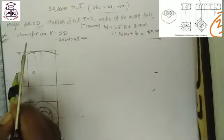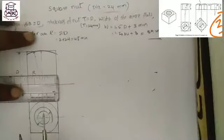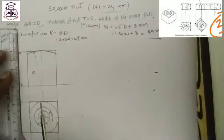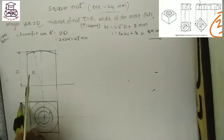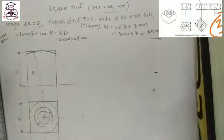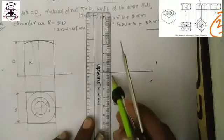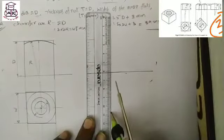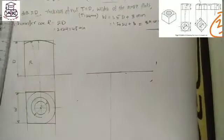The height d equals 24 mm. Note that the diameter of 24 mm is not a fixed value — the diameter depends upon the question. This completes one view of the square nut. Next, draw another view of the square nut, that means the inclined view.